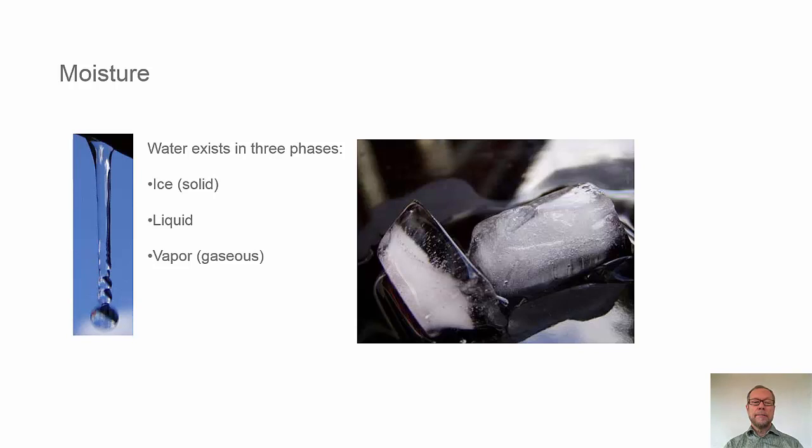The liquid, the regular rain, and vapor, which is the gaseous phase. We normally can't see it. We sometimes can see it when we breathe outdoors when it's cold, but normally we can't see the vapor phase.